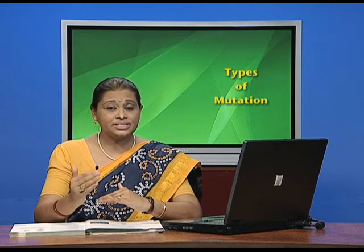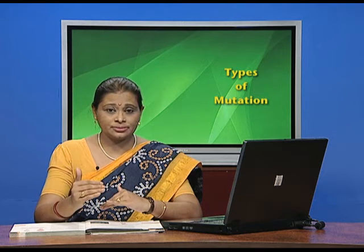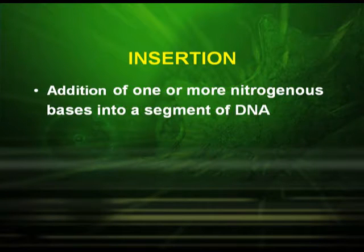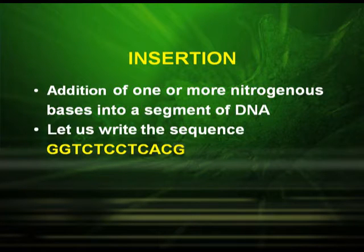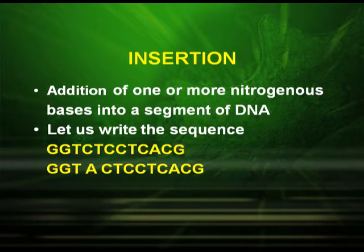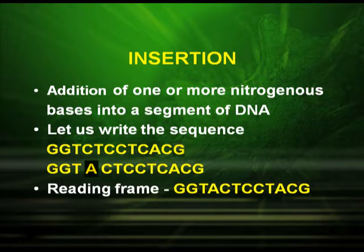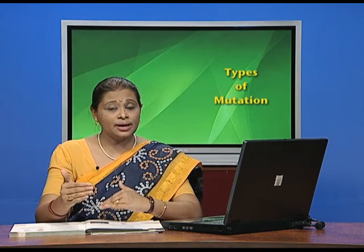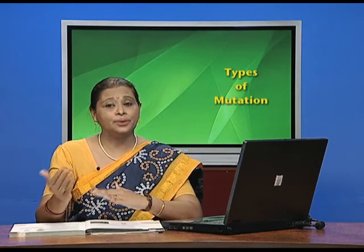Now let us start with the second type of mutation, called insertion. Insertion means addition of one or more nitrogenous bases into a segment of DNA. Again, let us write a hypothetical sequence: G, G, T, C, T, C, C, T, C, A, C, G. Now you insert A after G, G, T. So the reading frame becomes G, G, T, A, C, T, C, C, T, A, C, G — which is very much different from the previous one. That leads to abnormal RNA and might result in an abnormal protein.